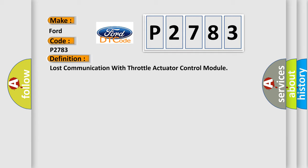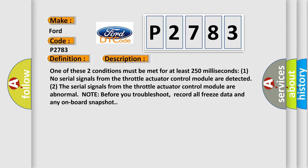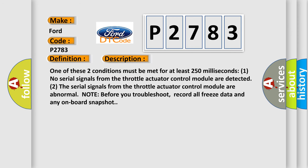The basic definition is: Lost communication with throttle actuator control module. One of these two conditions must be met for at least 250 milliseconds: one, no serial signals from the throttle actuator control module are detected; or two, the serial signals from the throttle actuator control module are abnormal. Note: before you troubleshoot, record all freeze data and any onboard snapshot.